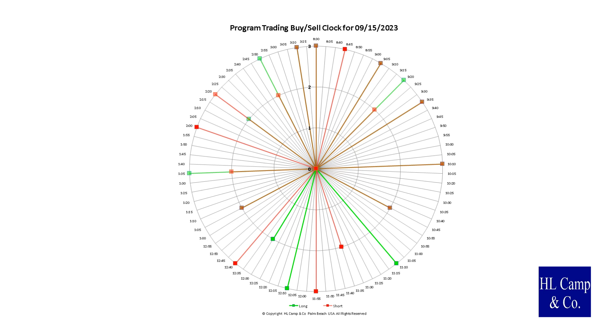Program trading clocks are designed to let you know whether algos are in favor of the long or short side. You can now use time to trade your account with algos and not against them.